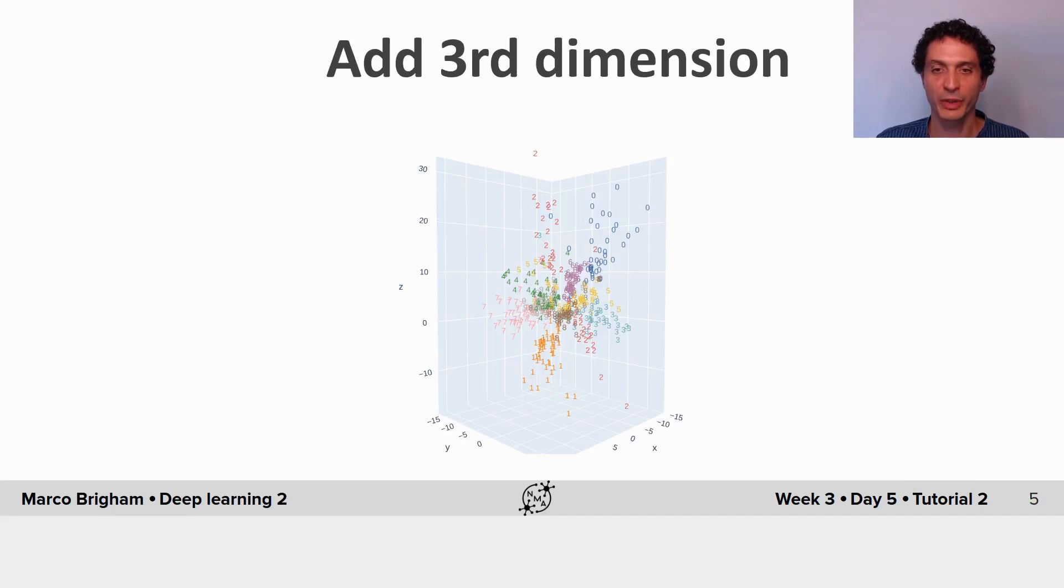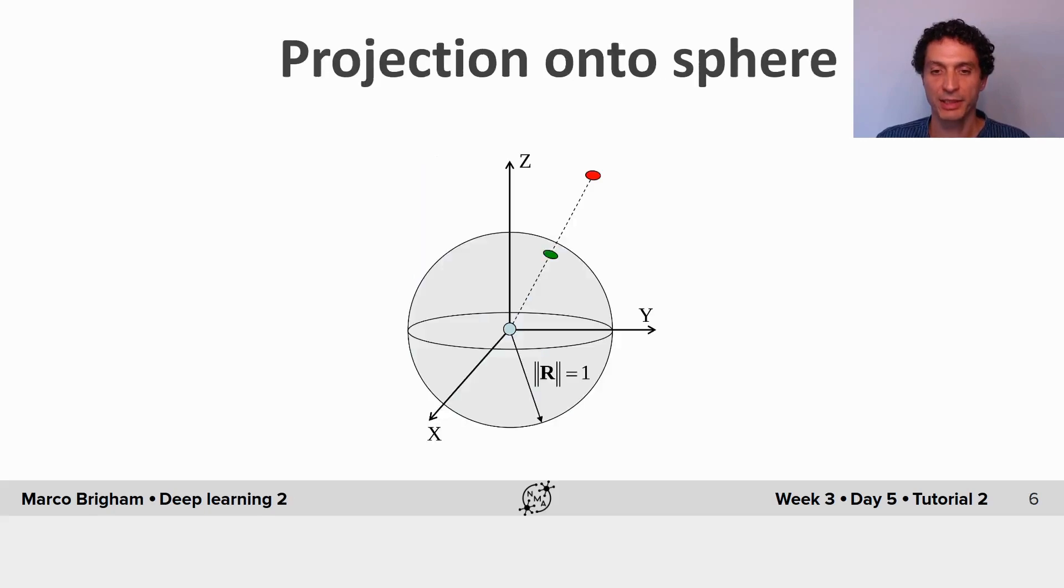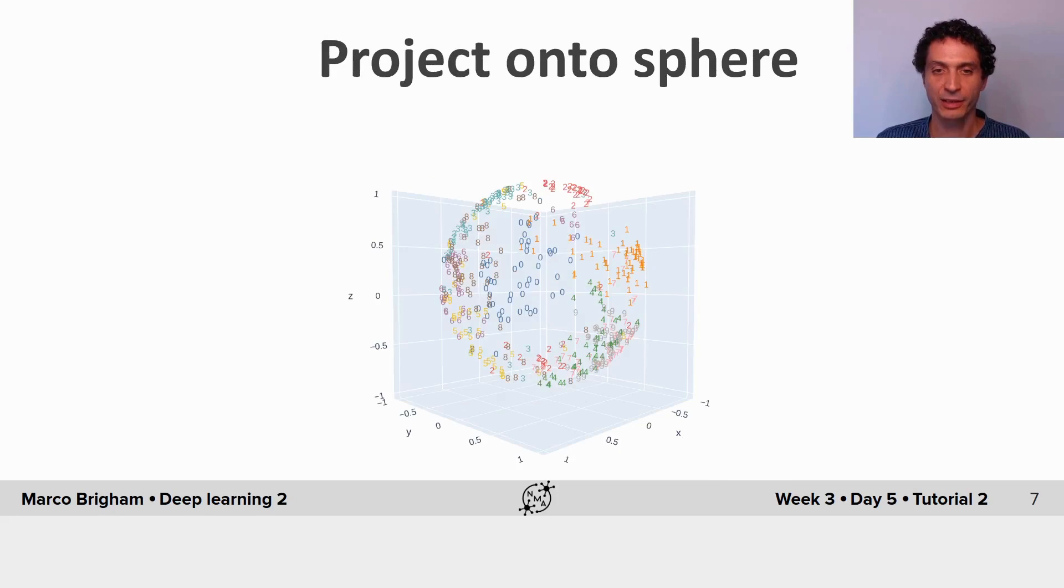Going one step further, we add a third dimension and now our latent space is in 3D. But since we want 2D representations, we project it back to the surface of the sphere with unit radius, also called S2. This is the result of the dataset now projected on the surface of the sphere.